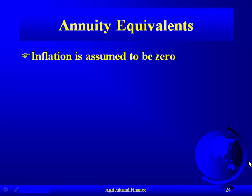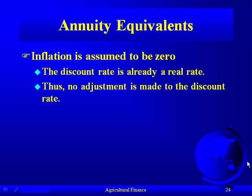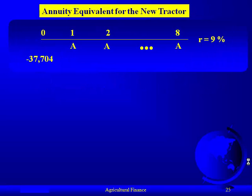Remember, to keep this simple, we've assumed inflation to be zero. The discount rate is then already a real rate — if we get rid of inflation, we don't have to worry about real or nominal, it's all the same. We're invoking this just to simplify this particular problem. Since the discount rate is already a real rate, we don't have to make any adjustments to it.